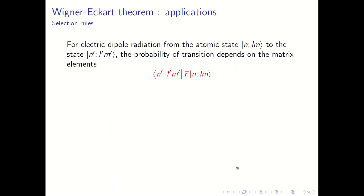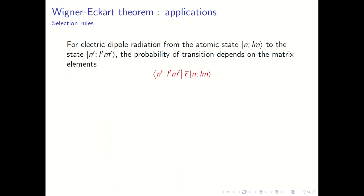I will round this off with one more very important application: selection rules. We have not studied electric dipole radiation in detail in this course yet, but basically, if you have radiation shining on an atomic eigenstate, perturbing it and sending it to another eigenstate |n', L', M'⟩, the probability of the transition depends on the matrix element of the position operator r. This is for electric dipole radiation. This matrix element controls whether the transition occurs at all, and if it occurs, how strong it will be — essentially how intense the spectral lines will be.